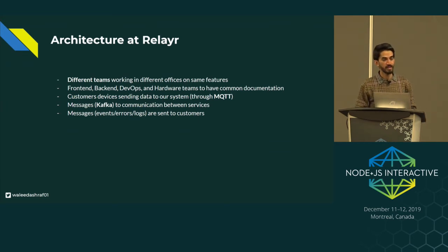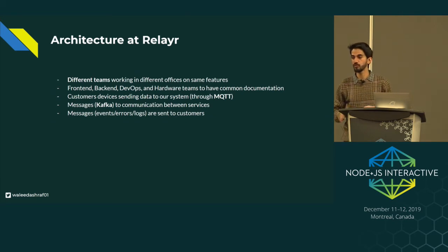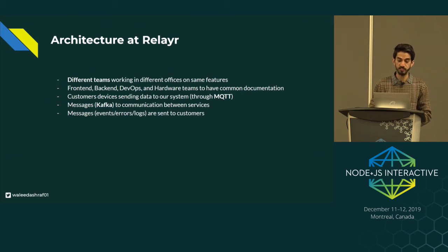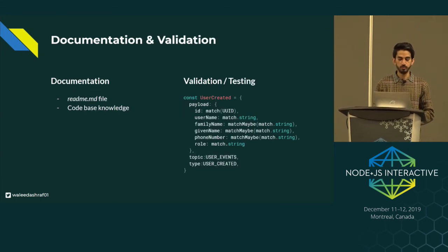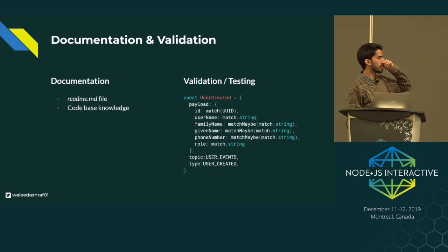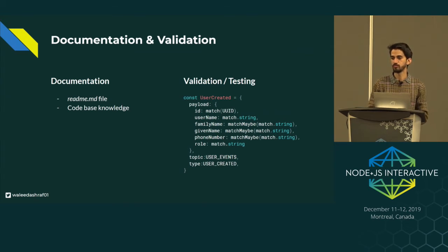In my company there are different teams — backend, DevOps, frontend — and all of them need to know the content of the messages, especially the backend teams. We also reside in different offices: some in Munich, some in Berlin. Previously, we were doing something like this: we had a readme markdown file, and someone who knew the codebase would know what's in the payload. For testing, we had hard-coded schemas in the services where we just wrote down all the properties and matched them using a library like AJV. But this gets outdated, and whenever you want to update, you have to write it as a hard-coded message.